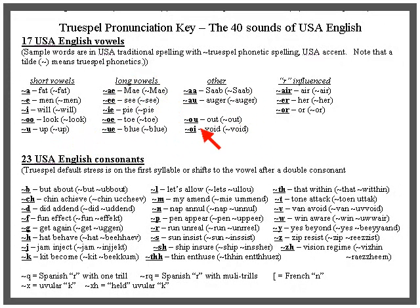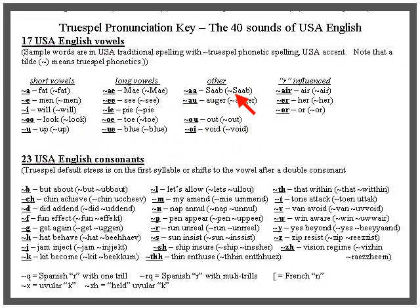These are the diphthongs: AU and OY. You can hear that they are two sounds joined together as one vowel. Then AH as in 'sob' and AW as in 'auger.' These two sounds get interchanged quite a bit — where people may see the word 'auger' and say 'auger,' especially out west and in the midwest.